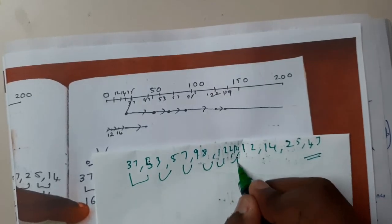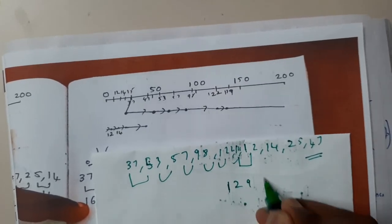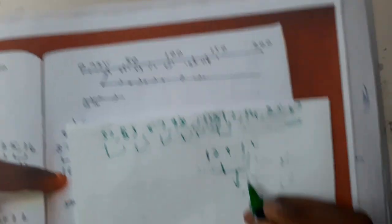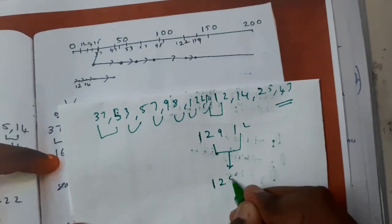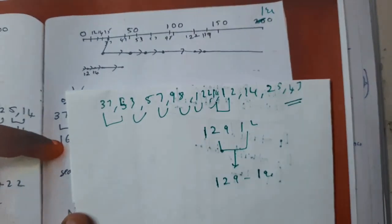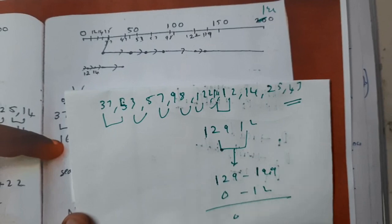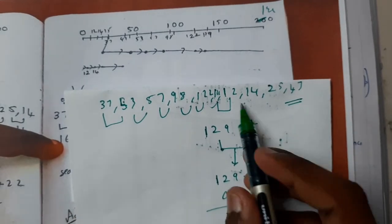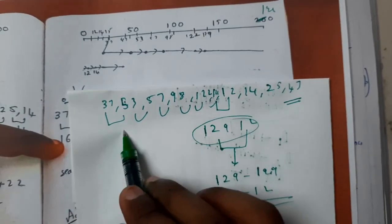I hope everyone remembers how to calculate 129 to 12. Initially you need to calculate 129 minus 199 - please remember it is 199, it's not 200 - then 199 minus 0 minus 12. So the final result will be your value for this particular difference.